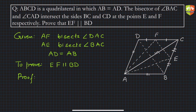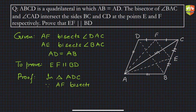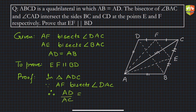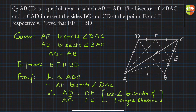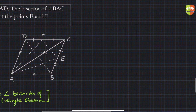In triangle ADC, since AF bisects angle DAC, by the Internal Angle Bisector Theorem we get: AD upon AC is equal to DF upon FC. Let this be equation (1).